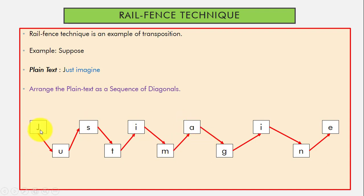So you can see here, J-U-S-T, I-M-A-G-I-N-E. So step 1, arrange the plain text as a sequence of diagonals.